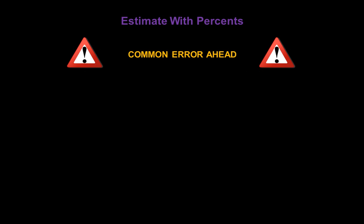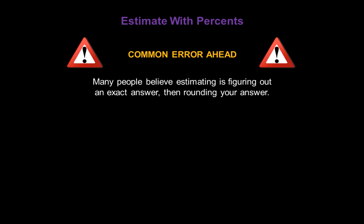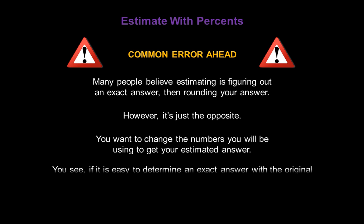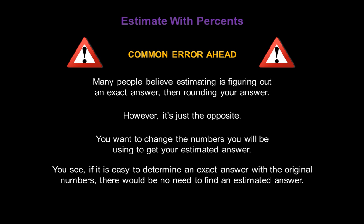Now there's a common misconception about estimation I'd like to address right up front. Many people believe estimating is figuring out an exact answer, then rounding that exact answer. However, it's just the opposite. What you want to do is change the numbers you will be using to get your estimated answer. If it was easy to determine an exact answer with the original numbers, there would be no need to find an estimated answer.